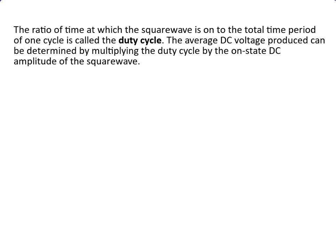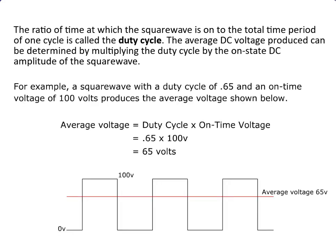The average DC voltage produced can be determined by multiplying the duty cycle by on-state DC amplitude of the square wave. For example, a square wave with a duty cycle of 0.65 and an on time voltage of 100 volts produces the average voltage shown below. The average voltage equals the duty cycle multiplied by the on time voltage.